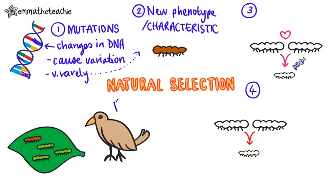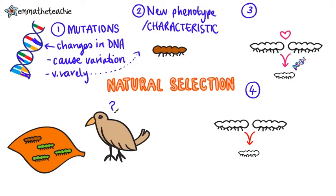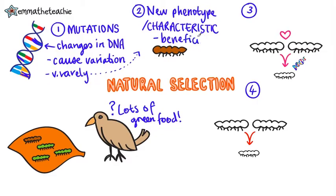This might be bad news because he stands out to predators. But maybe there's a change in the environment — for example, if there was a drought, the leaves might be brown as well. Suddenly, being brown is looking pretty good as he's really camouflaged.